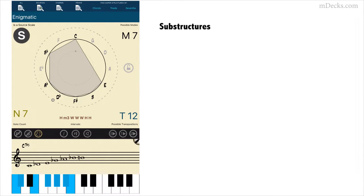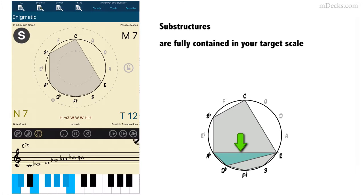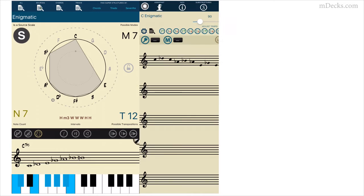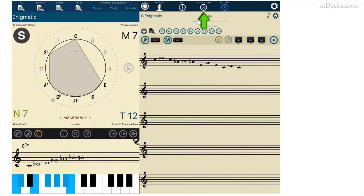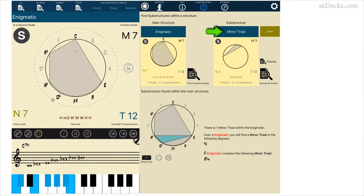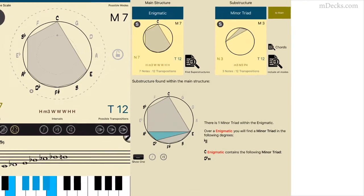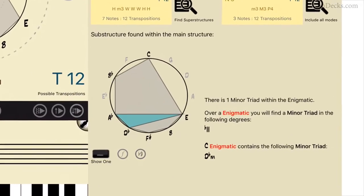A substructure is any structure contained in the scale or structure you are practicing. Let me show you an example using a minor triad as a substructure of the enigmatic scale. So we load the substructures panel and the minor triad as a substructure. Tessitura will find all the minor triads contained in the enigmatic scale.